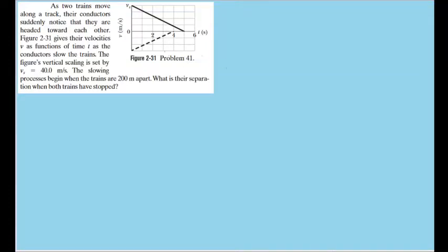In this problem, we're given the velocity graphs of two trains as they move toward each other. And if they start 200 meters apart, we're looking to find their final separation distance when the trains stop moving.